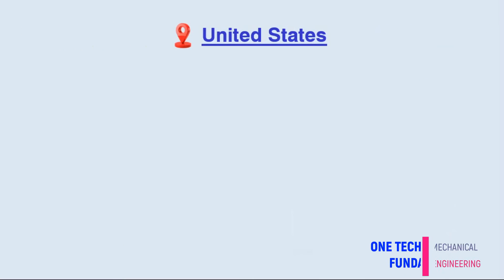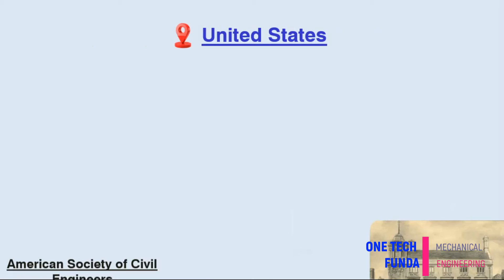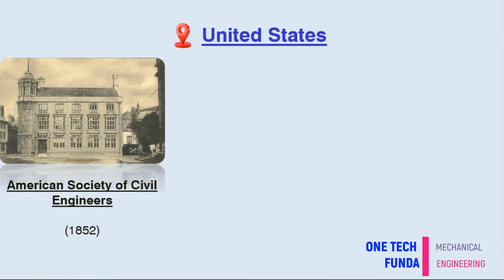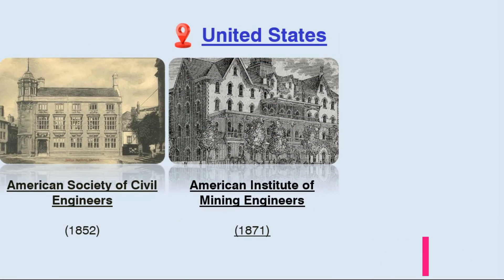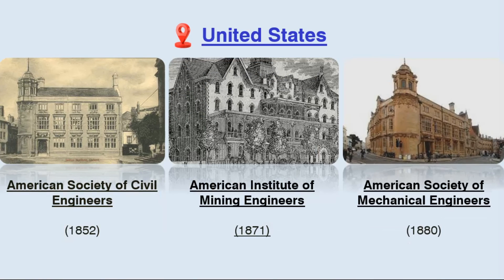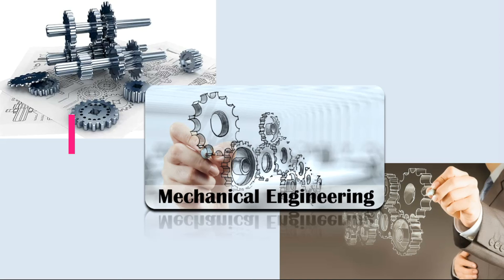In the United States, the American Society of Civil Engineers was formed in 1852. The American Institute of Mining Engineers was formed in 1871. Then the American Society of Mechanical Engineers, ASME, was formed in 1880, becoming the third such professional engineering society. Education in mechanical engineering has historically been based on a strong foundation in mathematics and science.